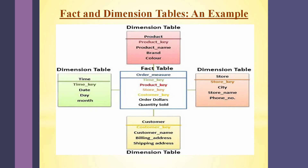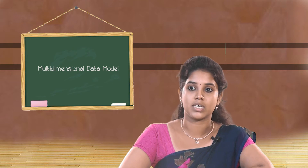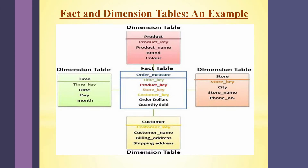Here is an example on the screen which gives you an idea regarding the fact and dimension tables. You can observe that there is a fact table which consists of different keys such as time key, product key, store key, and customer key, which indicate the different dimension tables. It also consists of facts or measures such as order dollars and quantity sold. Considering the store key, this key is relating to the dimension table store, which gives further information regarding the dimension store, such as city, store name, and phone number.